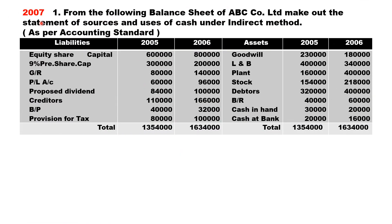From the 2007 question paper: from the following balance sheet of ABC Company Limited, make out the statement of sources and uses of cash under the indirect method, as per accounting standard. Equity share capital comes under finance activity — last year six lakh, current year eight lakh, an increase of two lakh, called issue of equity share capital.